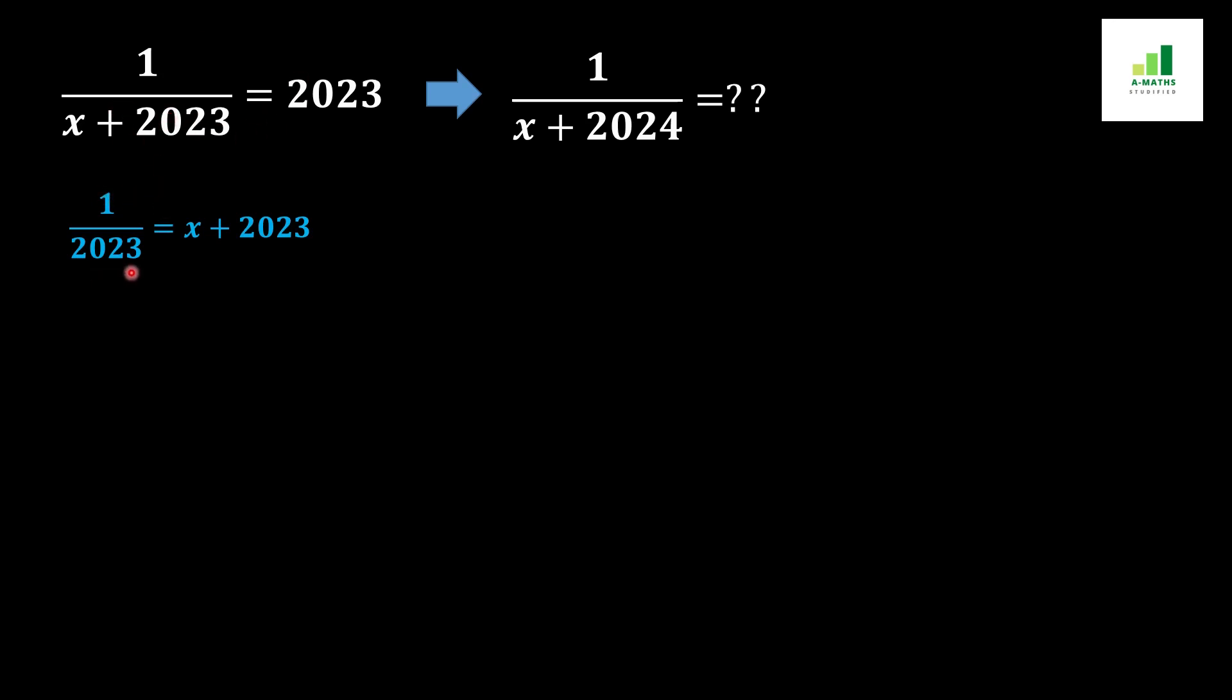After taking reciprocal on both sides of this equation we should get 1 over 2023 equals x plus 2023. Now in the next step, this 2023 will move to the other side of the equation and it will convert from positive 2023 to negative 2023.